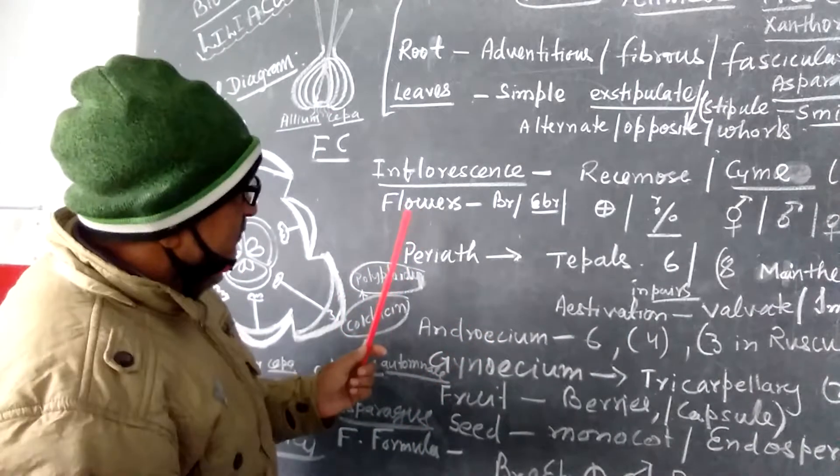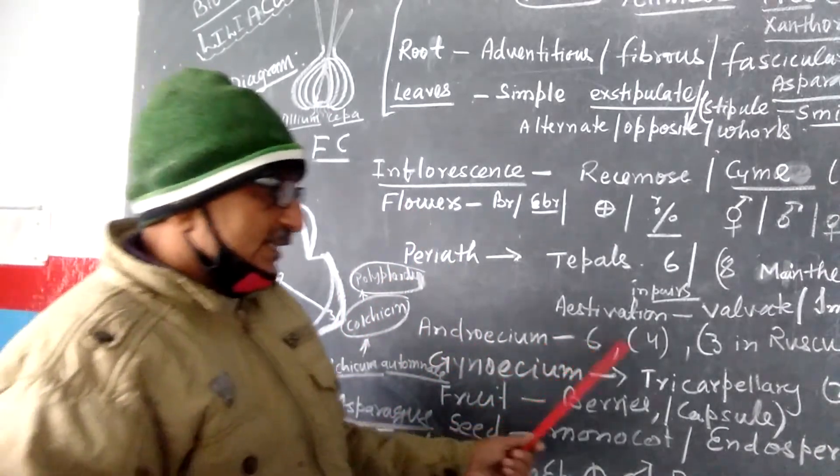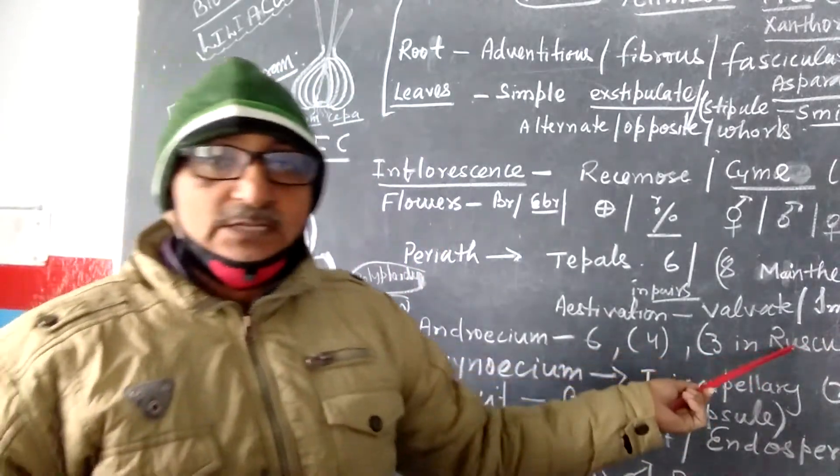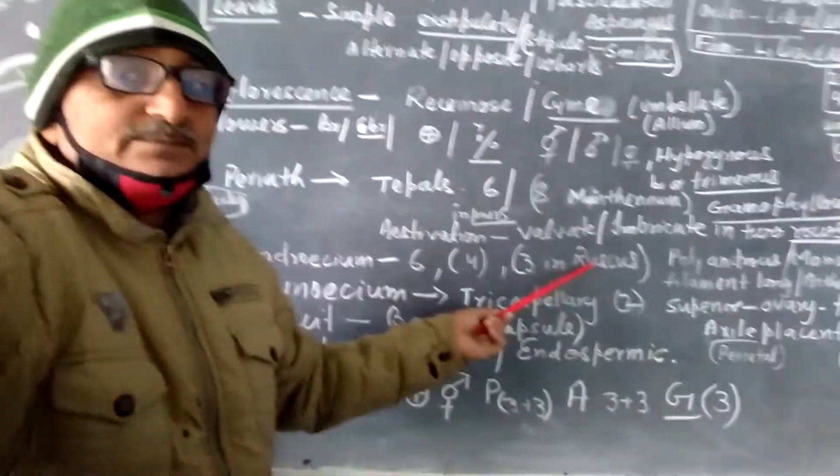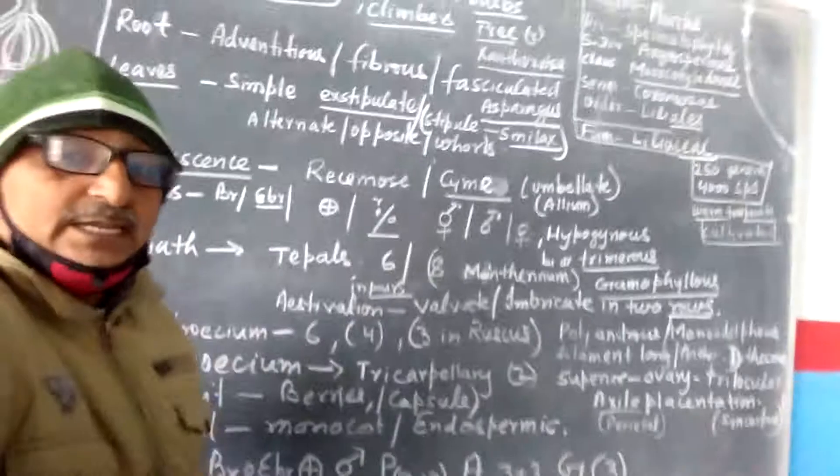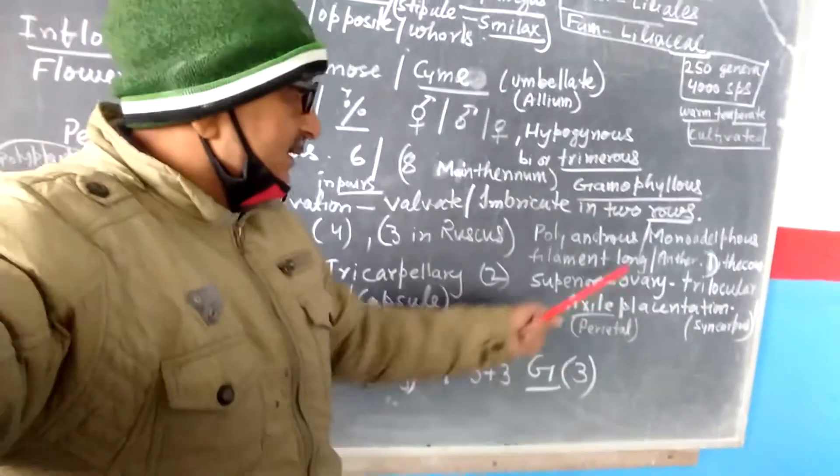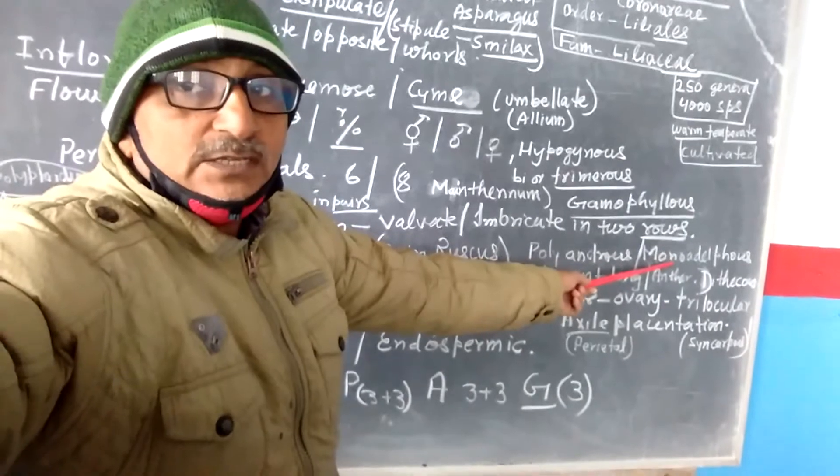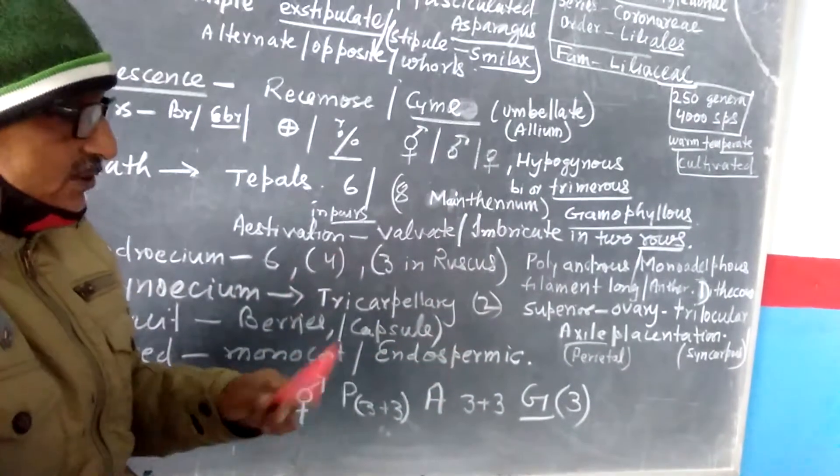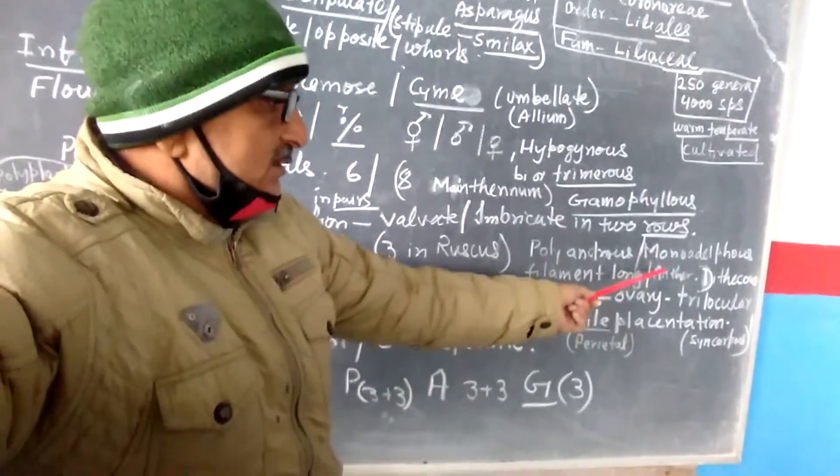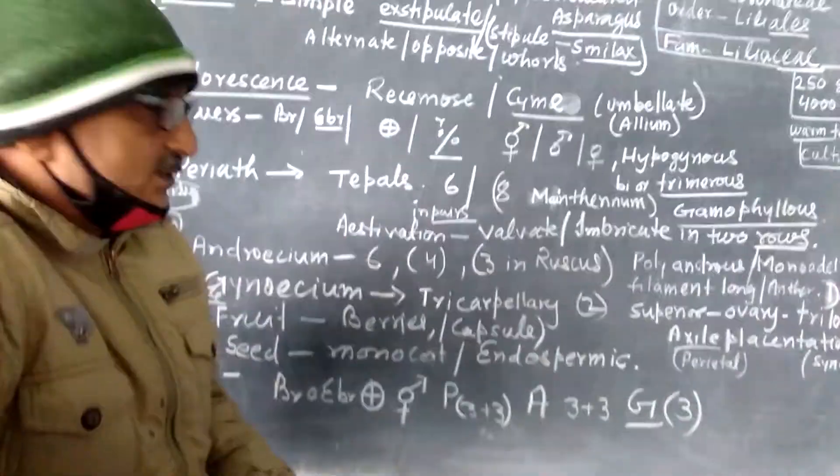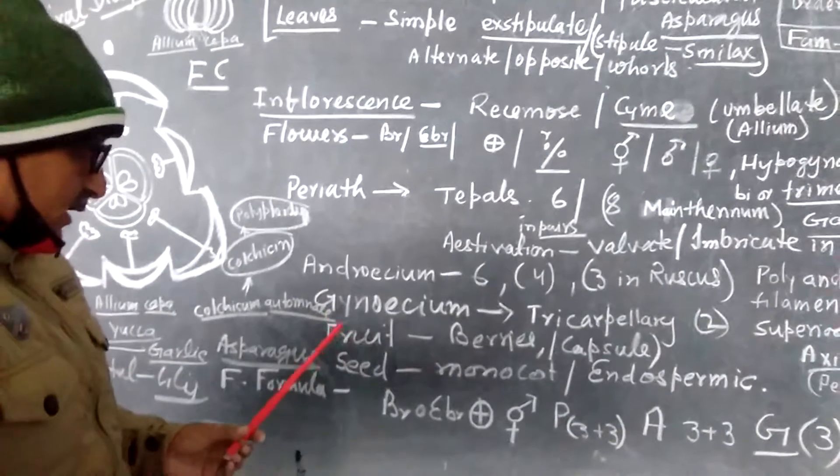Now the androecium. Androecium is 6 or sometimes 3 in Ruscus plant. It is 3 in number. Polyandrous, many stamens are there, and monoadelphous, they unite together to form a tubular structure. Filament is long. Anther is dithecous, so anther has two lobes.